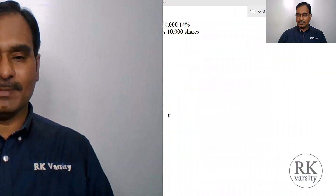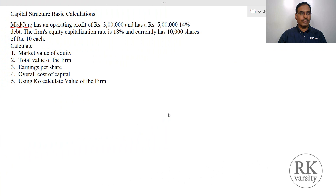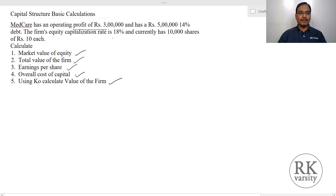I will show you how to calculate these basic equations with the help of an example. Using this example you need to calculate: market value of equity, total value of the firm, earnings per share, overall cost of capital, and using the overall cost of capital, recalculate the value of the firm. The values given are operating profit, debt, cost of debt, equity capitalization rate or cost of equity, and number of shares.